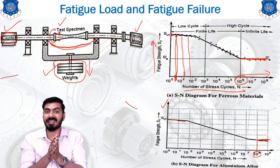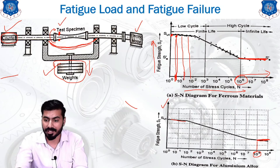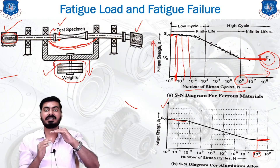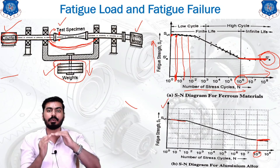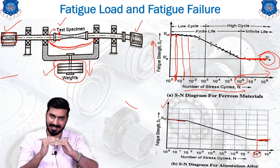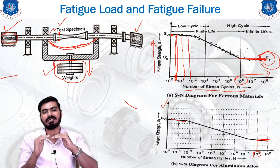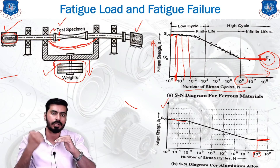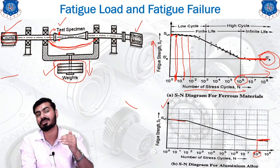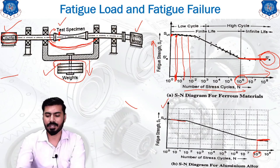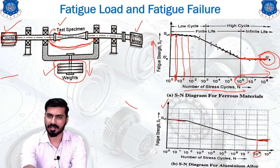This is how we calculate the endurance limit, represented by SE'. The endurance limit is the particular value of the stress such that if you keep reducing the stress from SUT down to SE' and reduce it further, the material will not fail up to 10^6 or 10^8 number of cycles, depending on the material. This is how we determine the endurance limit stress.